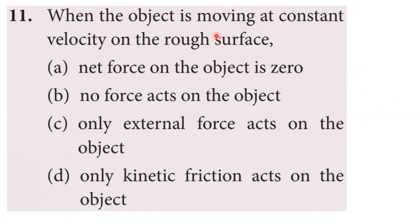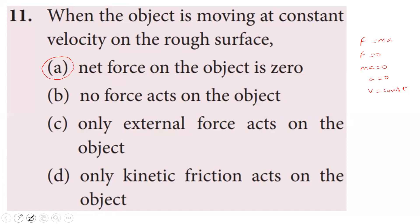Question 11: when an object is moving at constant velocity on a rough surface. At constant velocity, net force is zero. Forces act, but the net force is zero. By Newton's second law, net force equals mass times acceleration, so acceleration is zero. Since acceleration is zero, velocity remains constant. The sum of all forces is zero. Option A is correct.